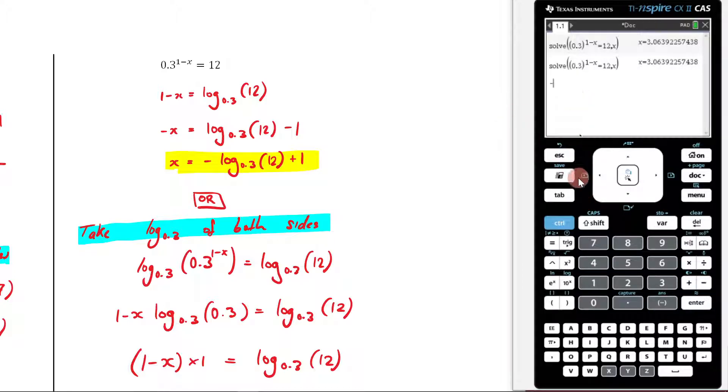Let me type this in: negative log base 0.3 of 12 plus 1. And that is the same. Perfect. So if we type it into the CAS, it just gives us an answer exactly like that, which is exactly what we see there. Hopefully this has made sense on how to answer this question.